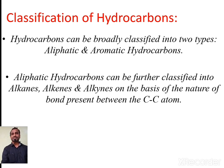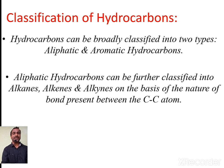Next we are interested to study the classification of these hydrocarbons. Hydrocarbons can be broadly classified into two types: one is called aliphatic hydrocarbons and the second is called aromatic hydrocarbons. We are especially interested to study aliphatic hydrocarbons, which can be further classified into three subclasses: alkanes, alkenes, and alkynes.